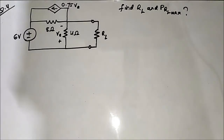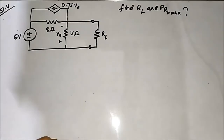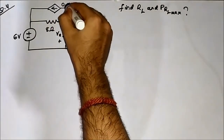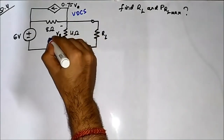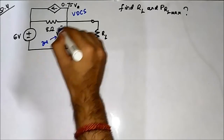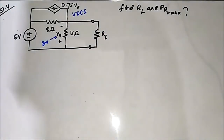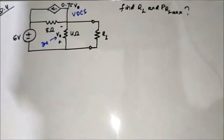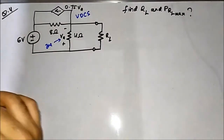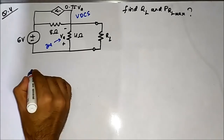Hello friends, welcome to engineering tutorial. We'll continue our discussion with maximum power transfer theorem with circuits involving dependent sources. Here is another circuit, and this is the dependent source — a voltage dependent current source. This is the important variable: the voltage across this 4 ohm resistor. We have to find the load resistance for maximum power transfer, so we'll use the usual Thevenin equivalent circuit approach and redraw the circuit.